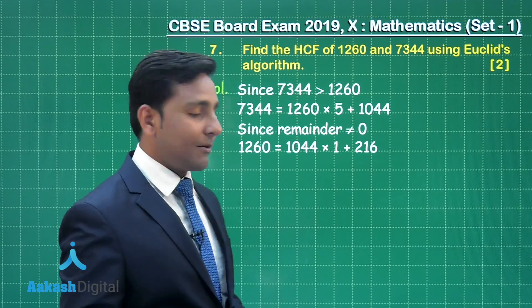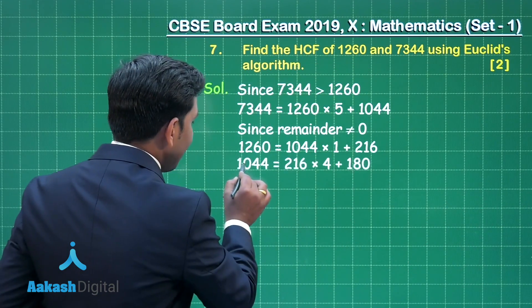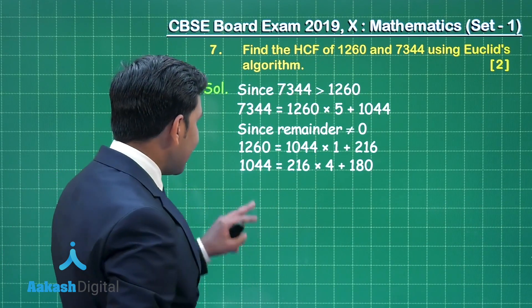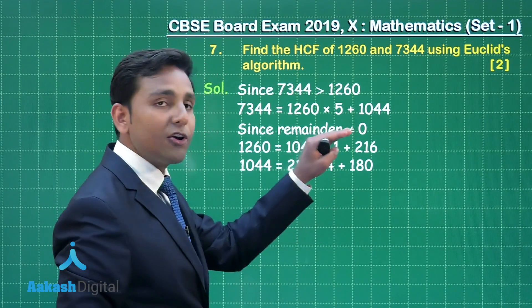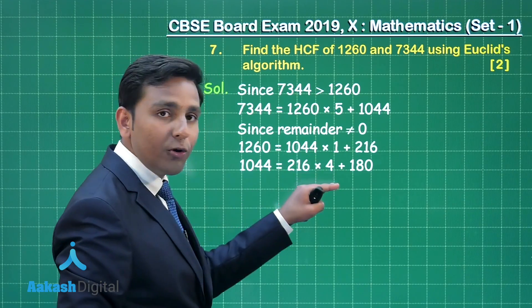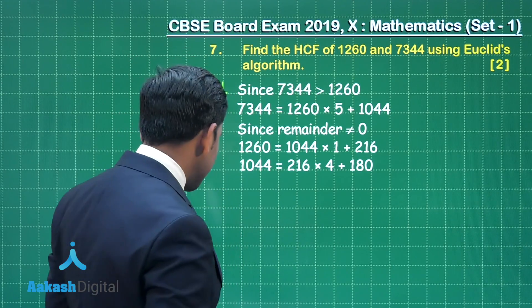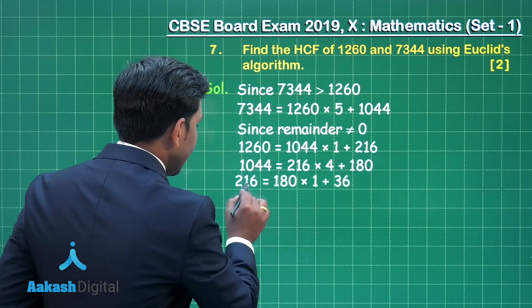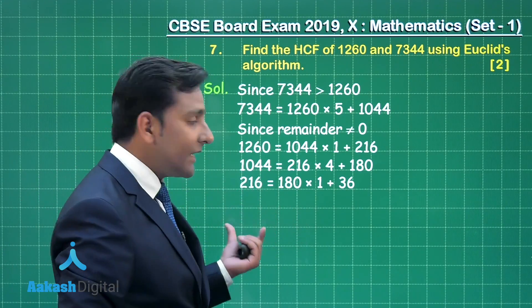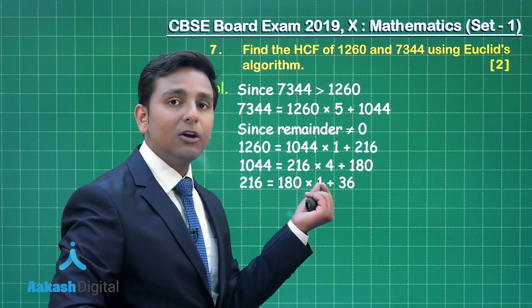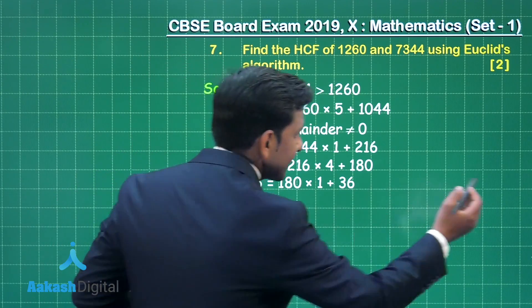We apply Euclid's division lemma again with dividend 1044 and divisor 216, getting quotient 4 and remainder 180 — again not equal to 0. Then we apply it again with 216 and 180, obtaining quotient 1 and remainder 36, still not equal to 0, so we move to the next step.